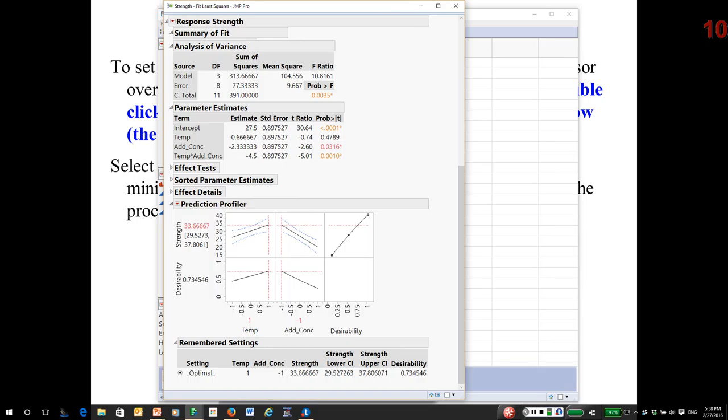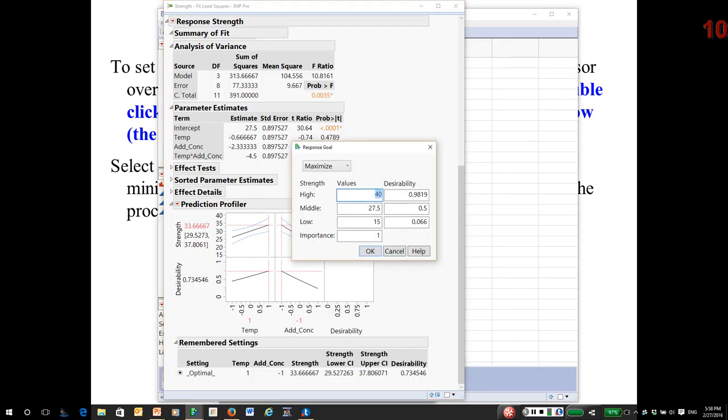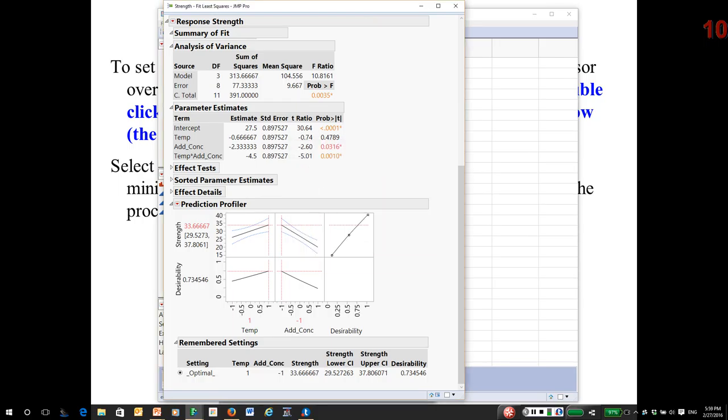So if I want to change the desirability function, put the cursor in the desirability or function profile window. Double-click, and up pops your response goal window. And I'm going to change it to minimize. I want to minimize the response.